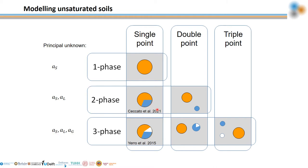Moreover, unsaturated soil can be modeled with the two-phase single-point formulation implemented by Cecchato et al. 2021, in which gas pressure and density are assumed to be zero, and only liquid and mixture momentum balances are stored at the nodes of the mesh. This is computationally less expensive than the three-phase and is adequate for most geomechanical applications.